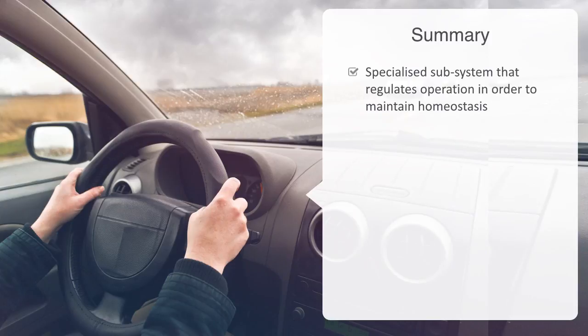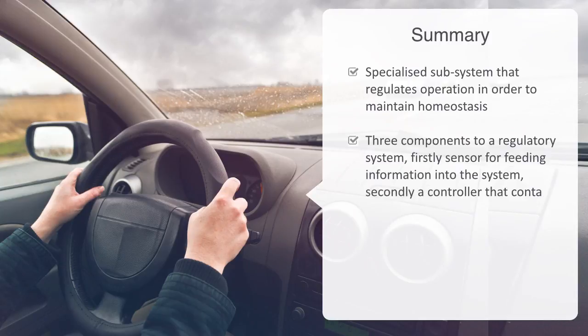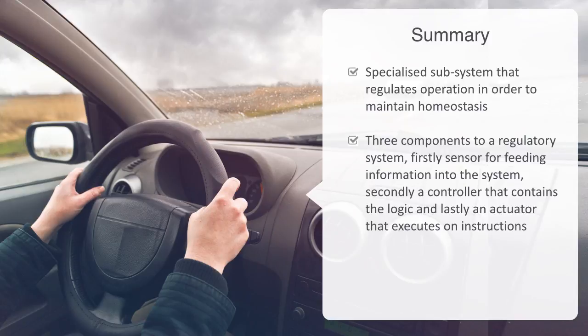Next, we talked about the mechanics behind control systems, looking at how there are essentially just three components to a regulatory system. Firstly, a sensor for feeding information into the system. Secondly, a controller that contains the logic or set of instructions for processing this information. And lastly, an actuator that executes some action in order to affect the state of the system or its environment.